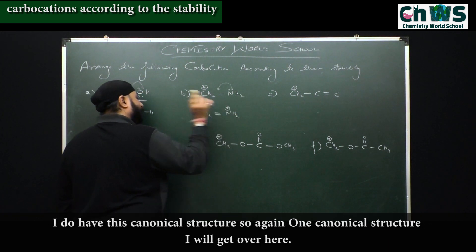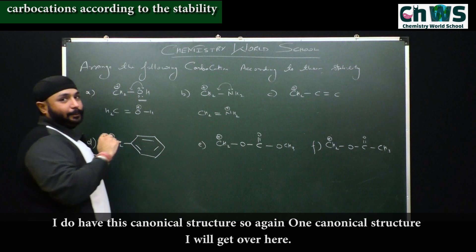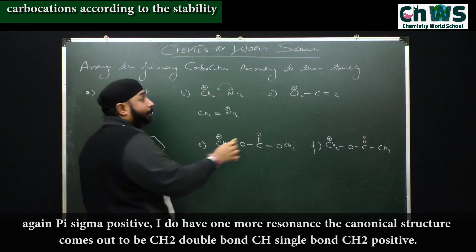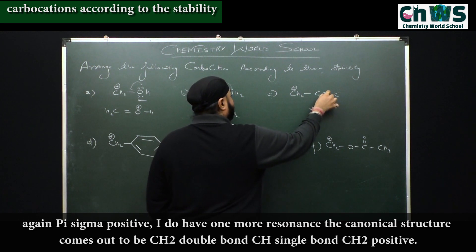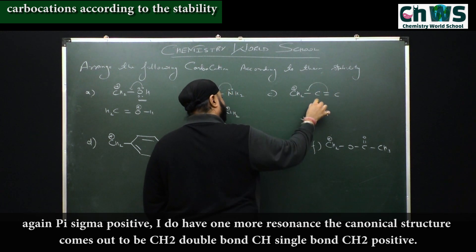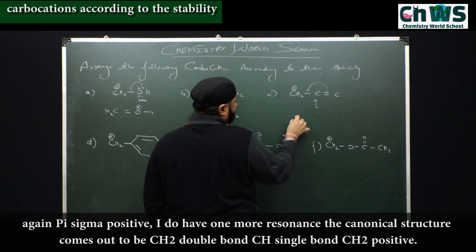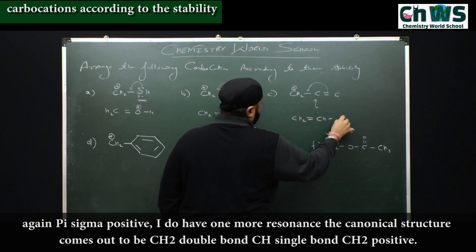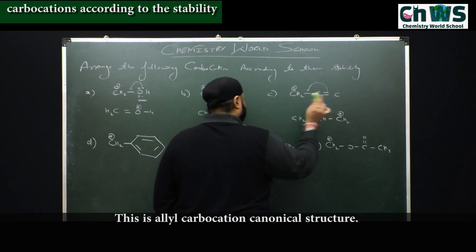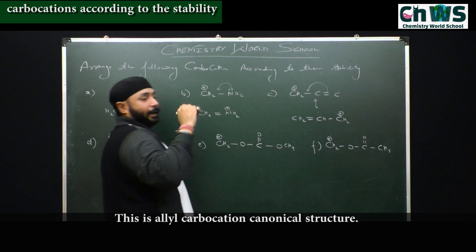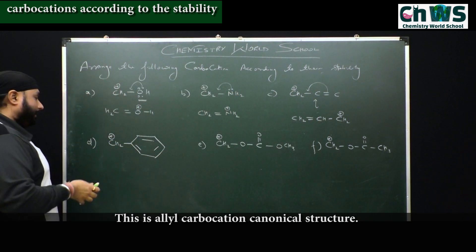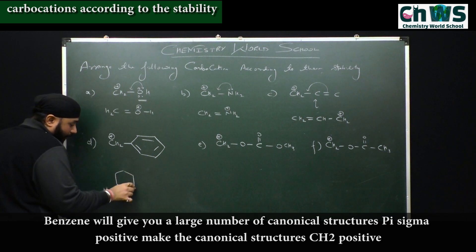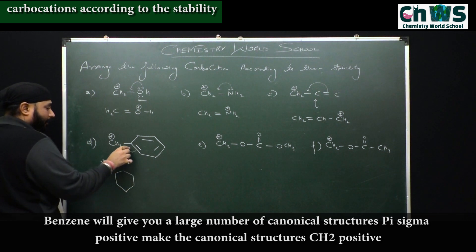I get one canonical structure here. Again, pi sigma positive — I have one more resonance, and the canonical structure comes out to be CH2=CH–CH2(+). This is the allyl carbocation. Now for the benzyl carbocation, the benzene ring will give a large number of canonical structures via pi sigma positive.